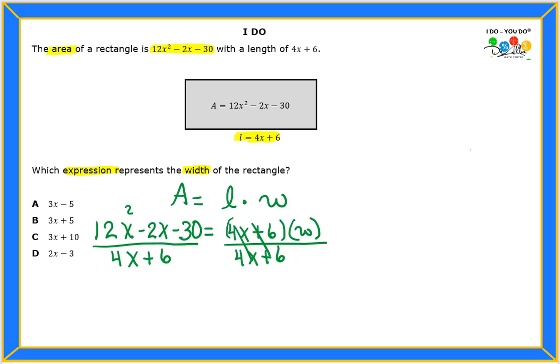Very good. So we're going to write down the problem over here on the right side. My dividend, which is the number inside, is going to be 12x² - 2x - 30. And all of these will be divided by 4x + 6.